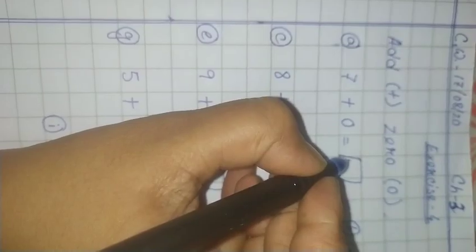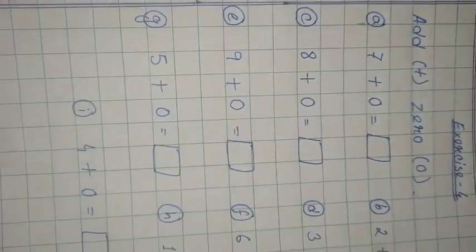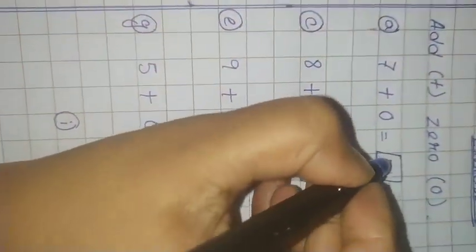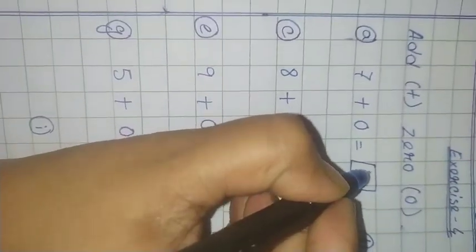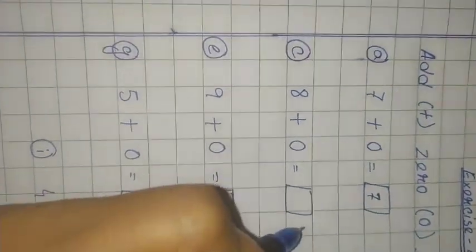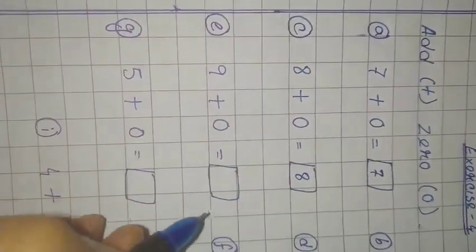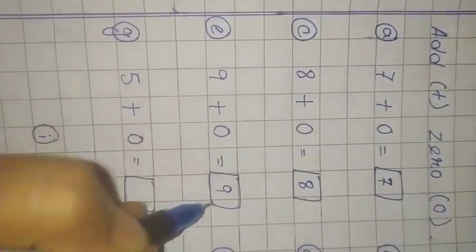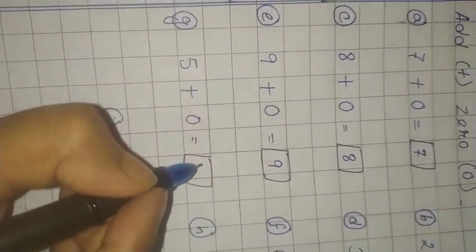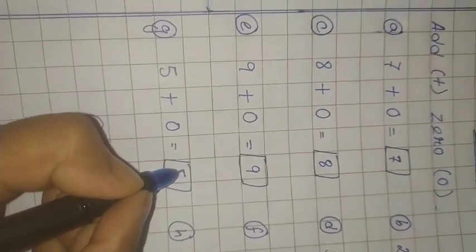Start: 7 plus 0, it will be unchanged. 7 plus 0 equals 7. 8 plus 0 equals 8. 9 plus 0 equals 9. 5 plus 0 equals 5.